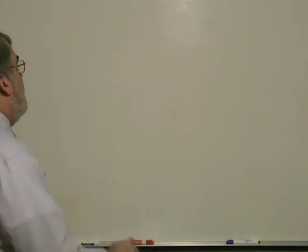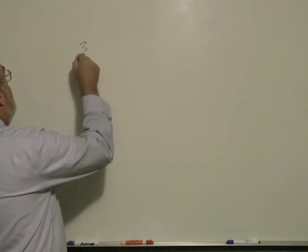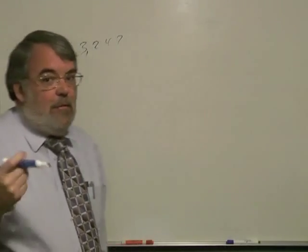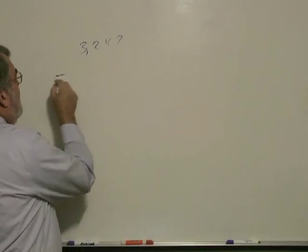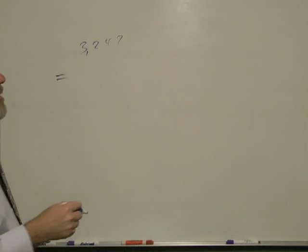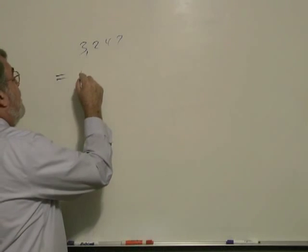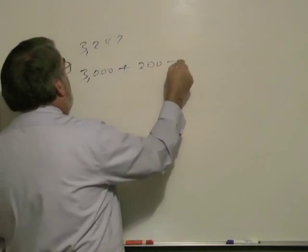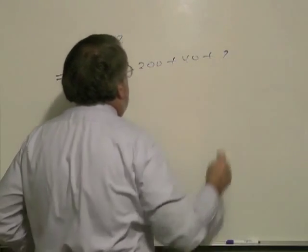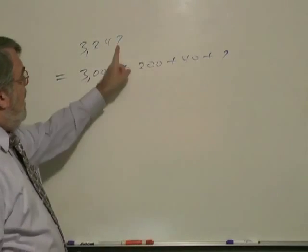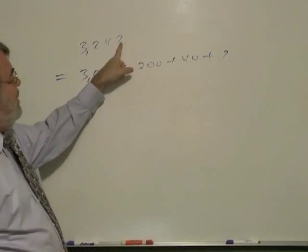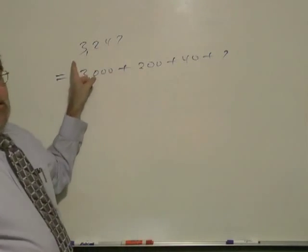Let's look at this number: 3,247. You learned that this is a sum of numbers: 3,000 plus 200 plus 40 plus 7. Each place has a value assigned to it—the ones place, the tens, the hundreds, and the thousands.